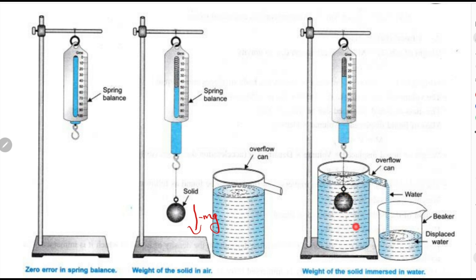As shown here, dip it into an overflow can. When an object is submerged in water, it will experience two forces. The net effect is that the weight of the object decreases, and part of the water will overflow. The overflowed water is collected in a beaker. According to the first part of Archimedes principle, the weight loss or buoyancy acting on an object in water is equal to the weight of the water being displaced. By weighing the water in this beaker, we can prove it.